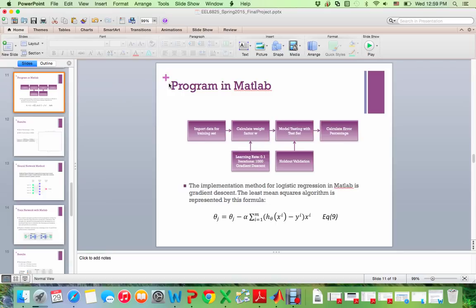So now talking about the implementation in MATLAB, we have got the data already. But the data needs to be separated into training set and test set. First, we use the training set to get the weight factor. The learning rate is defined as 0.1. The iterations is 10,000. And we use the gradient descent method for logistic regression. Then we use the test set, which has been left, it's one third of the total amount of samples we got. And we use the holdout validation. Afterwards, we calculate the error percentage.